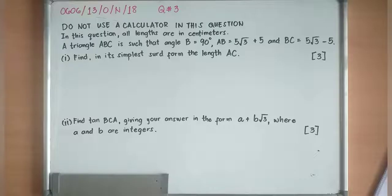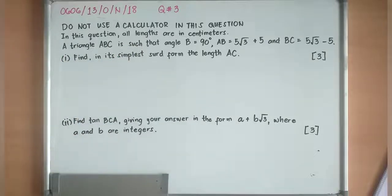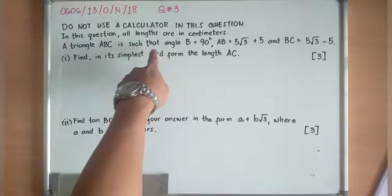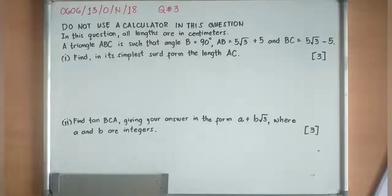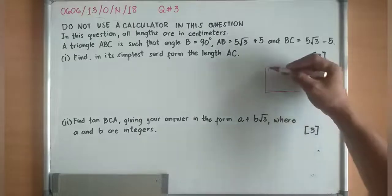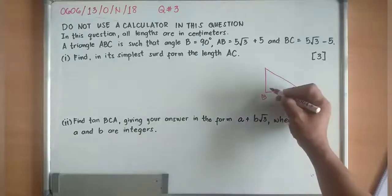This question is all about thirds, but we will be trying to apply some concepts about SOHCAHTOA or the trigonometric ratios because this is a question about a right-angled triangle. So in this question, do not use a calculator. All lengths are in centimeters. A triangle ABC is such that angle B is equivalent to 90 degrees. So it is a triangle where it's a right triangle and B is the 90 degrees.